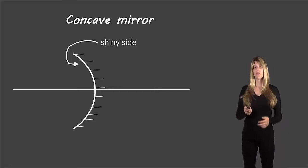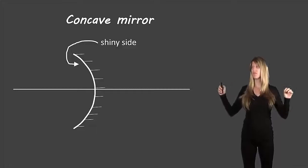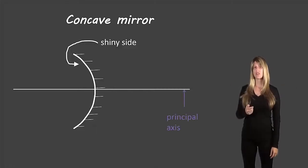And what we would call a line, this would be an imaginary line that goes perpendicular to the very edge of that concave mirror. So it goes straight through the middle. We call this the principal axis.